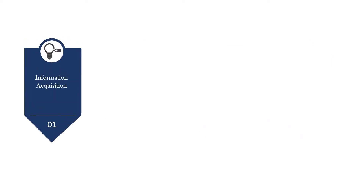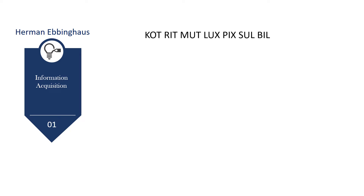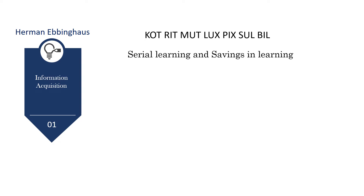The first one is information acquisition. It is popularized by Herman Ebbinghaus. Let us use the following nonsense syllables to understand this theory. This is an experiment used by Herman to define what serial learning and savings in learning are.